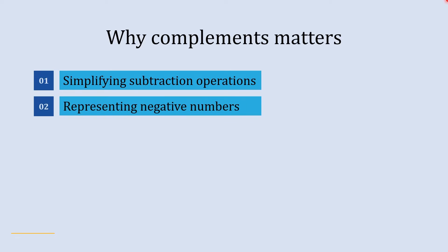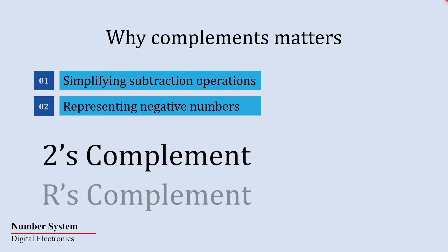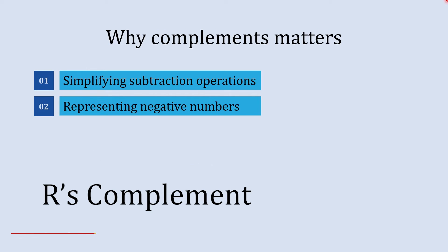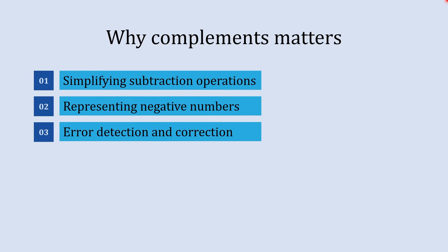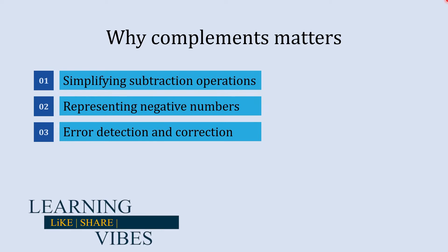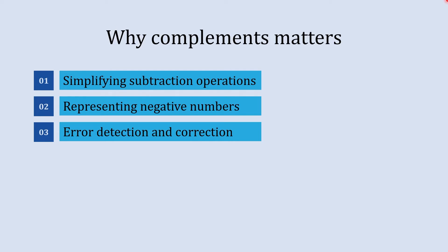These complements are also useful in representing negative numbers. The 2's complement is commonly used to represent negative numbers in digital electronics, and r's complement method is used to find the 2's complement. Another use is data integrity — complements play a role in error detection and correction techniques like checksums and cyclic redundancy check. These techniques use the properties of complements to detect errors in transmitted data by checking for consistency.